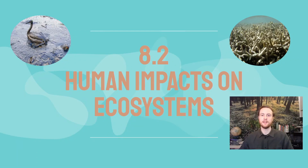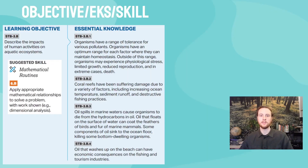Hey everybody, it's Mr. Smedes, and welcome to APES Video Notes for topic 8.2, which will cover human disturbances in ecosystems, focusing specifically on marine ecosystems. Our objective is to describe the effects of human activities on aquatic ecosystems. The skill we'll practice at the end involves applying a mathematical relationship to solve a problem, showing work using unit conversion or dimensional analysis.